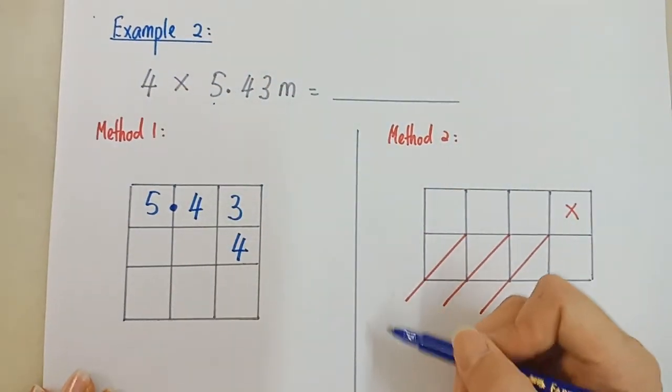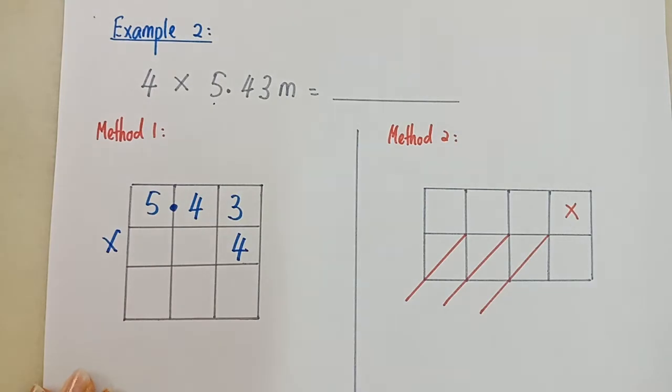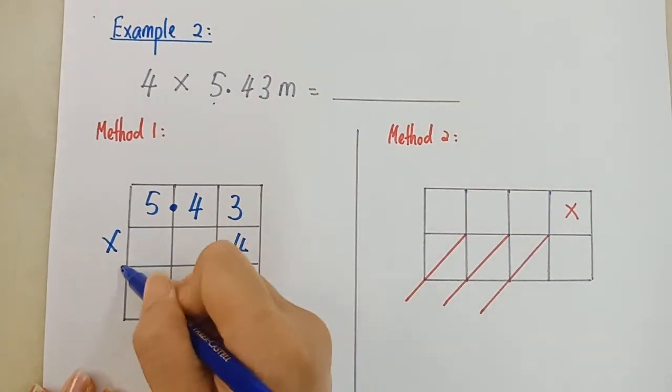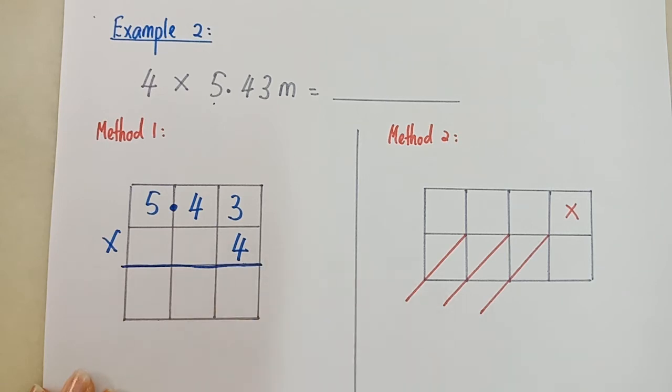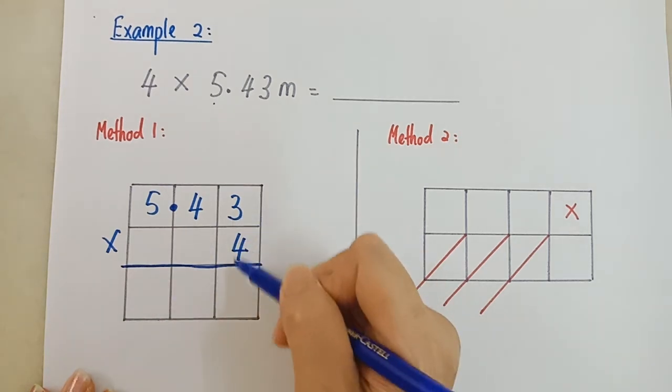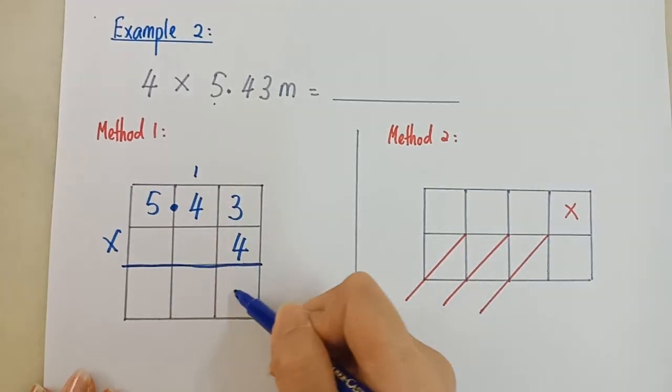Method 1, guna bentuk lazim. Yang banyak digit tulis di atas. Ini banyak digit kan? Tulis di atas. Boleh terbalikkan dia. 5.43 times 4. 4 bawah ke bawah. And then times.